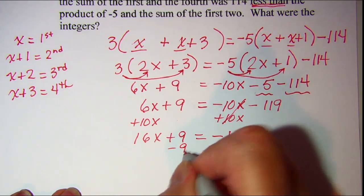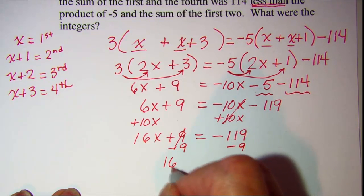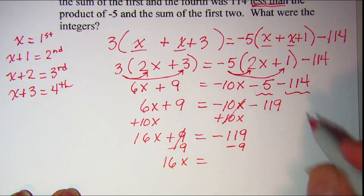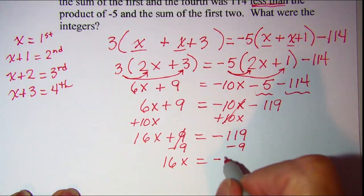Subtract 9 from both sides and I have 16x is equal to two negatives here. So I'm going to add those together. Negative 128.